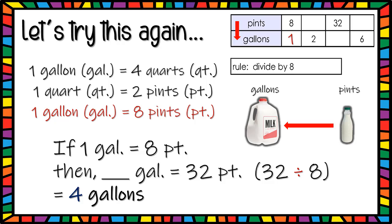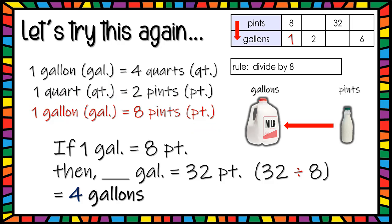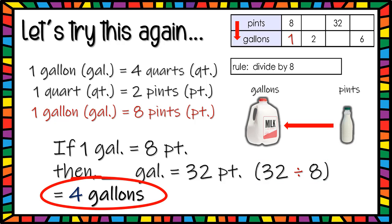Let's try this again. This time we are working with pints and gallons. Remember, 1 gallon equals 4 quarts, and 1 quart equals 2 pints. So 1 gallon equals 4 times 2, which gives us 8 pints. Now, if 1 gallon equals 8 pints, how many gallons is 32 pints? The rule states we divide — in this case by 8. So 32 divided by 8 gives us 4 gallons. Therefore, 32 pints equals 4 gallons.